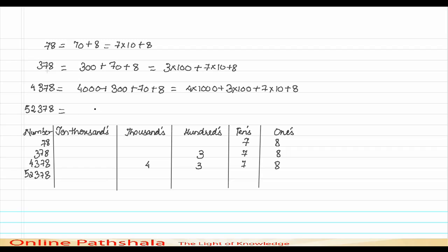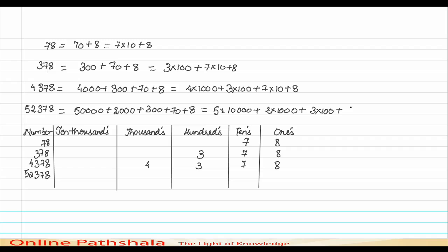Next example — 52,378. To represent this number I need 50,000 plus 2000 plus 300 plus 70 plus 8. The expansion is 5 into 10,000 plus 2 into 1000 plus 3 into 100 plus 7 into 10 plus 8. In the table: 8 in ones, 7 in tens, 3 in hundreds, 2 in thousands, and 5 in the ten-thousands place.